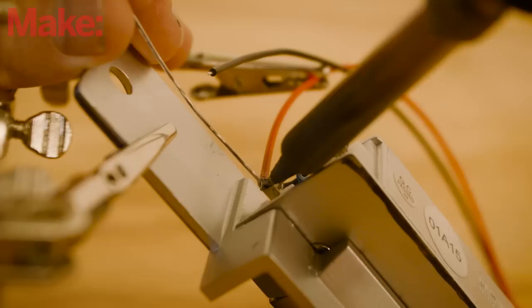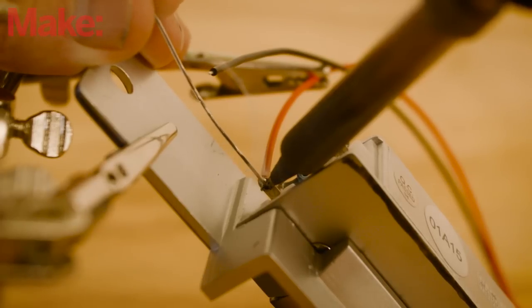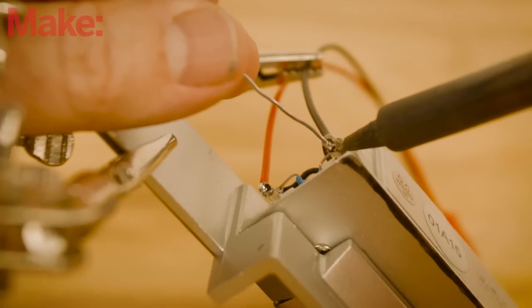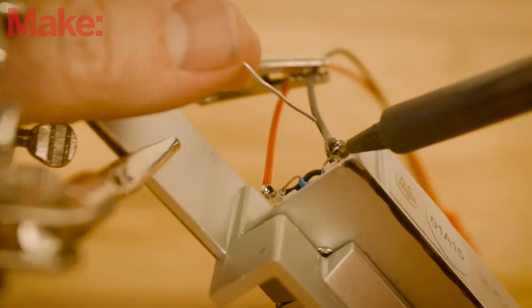You're nearly ready to install the door strike, but first, solder the other side of the JST connector to the two terminals on the door strike. Polarity doesn't matter with this connection.